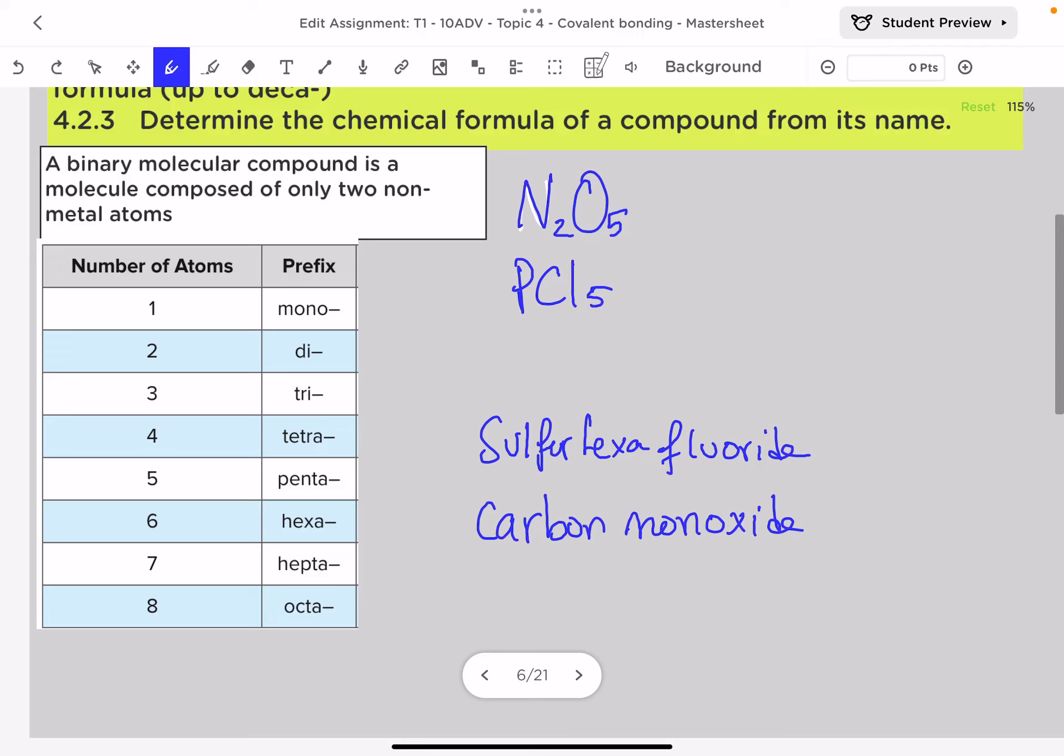This is a video tutorial in which I will explain how to name a binary molecular compound or how to write the chemical formula of a binary molecular compound. First of all, you need to know the name of the prefixes: number one means mono, two is di, three is tri, and so on, as shown in this table below.